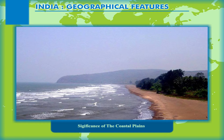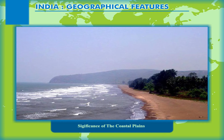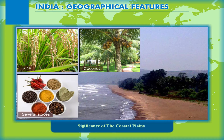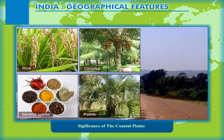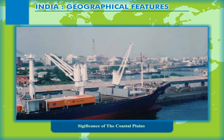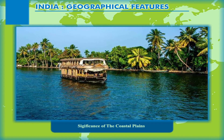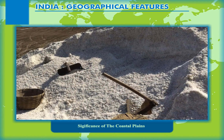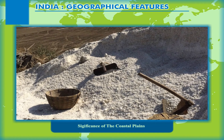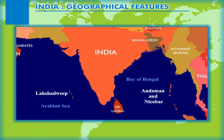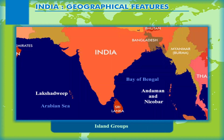The fertile coastal plains are suitable for the cultivation of crops like rice, coconut, several spices, and palms. There are only a few natural harbors along the coast as the coastline is not much indented. The backwaters and lagoons are helpful in the development of fishing activities, and the manufacturing of salt is an important economic activity in the western coastal plains.